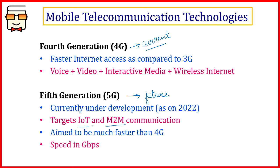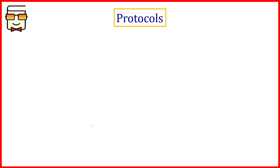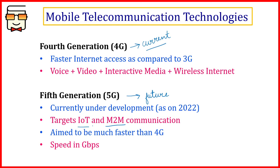With every generation, we aim to keep data transfer rates higher and provide additional services compared to the previous generation. Most homes today have internet speed in Mbps, whereas 5G aims to deliver speeds in gigabits per second (Gbps). That's all for today's lecture on different generations of mobile telecommunication. In the next video, we'll study different protocols governing data communication between devices. Thank you for watching.